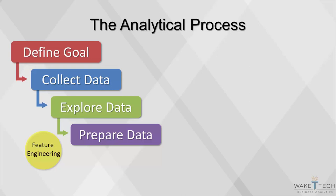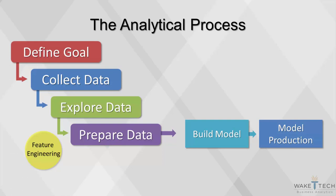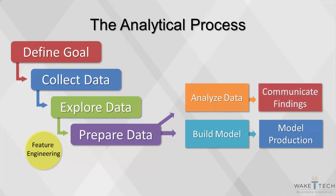The last two steps in the analytical process are to build models and then to put those models into production. A model is a type of mathematical equation that describes relationships among variables in a dataset, often for the purpose of predicting an outcome. By putting a model in production, an automated decision can be made when new data is observed. In some cases, models are not the goal—rather, the goal is to analyze data and communicate findings in an analytical report, presentation, or dashboard. Visualization of the data is also a key component throughout the entire analytical process.